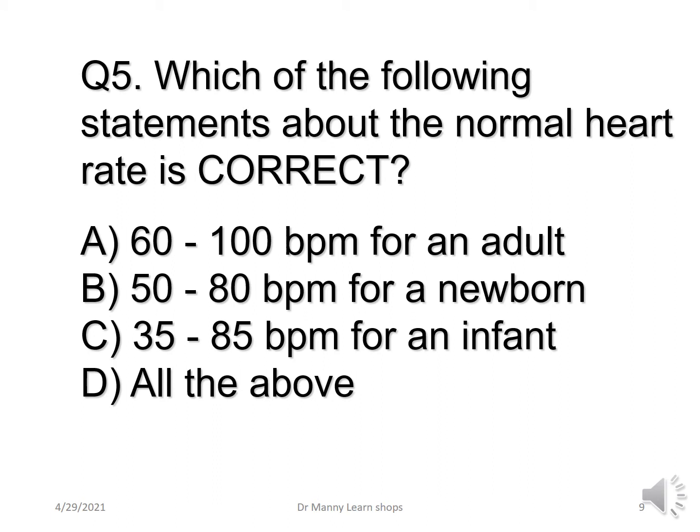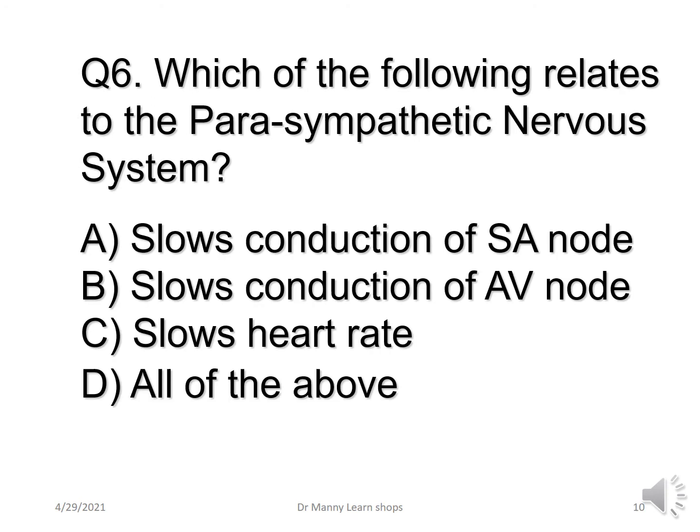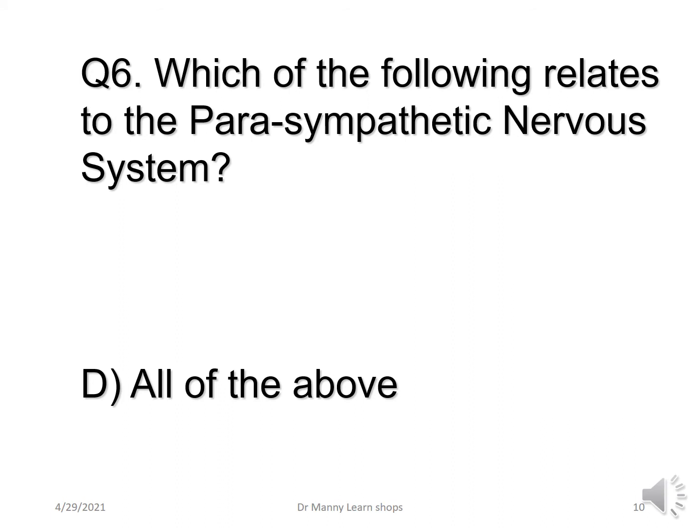Which of the following is normal about the heart rate? The correct answer is A. Which of the following relates to the parasympathetic nervous system — the rest and digest system? The correct answer is all of them relate to the parasympathetic nervous system.